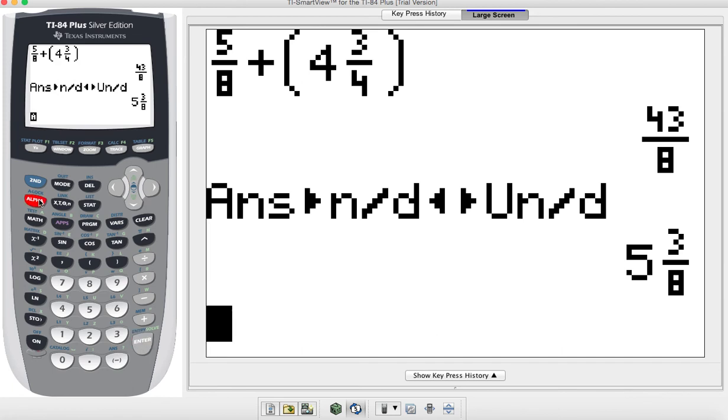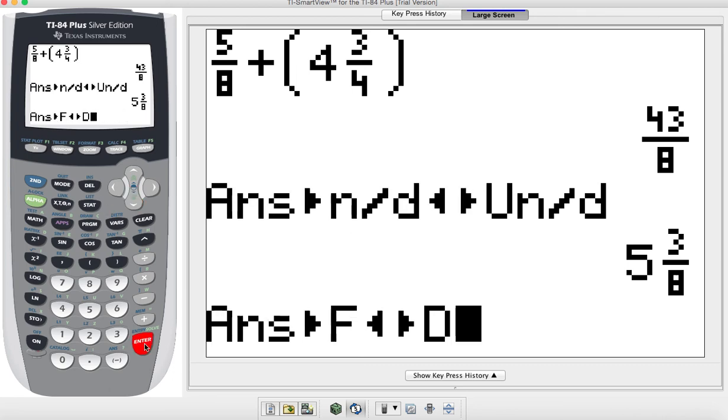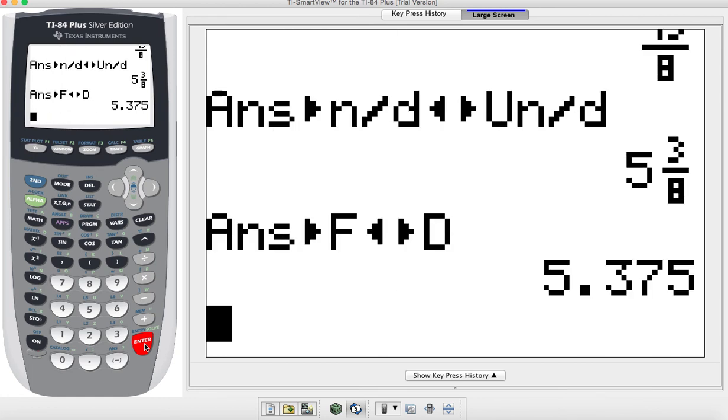But let's also say maybe I want that in decimal form. So I'll go to my fraction tab, fraction to decimal, hit enter, select that and hit enter again. It gives me 5.375.